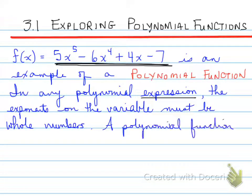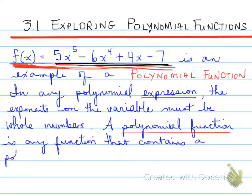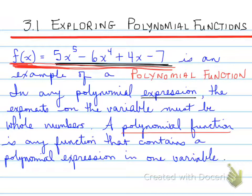A polynomial function — that's the whole thing underlined in red — is any function that contains a polynomial expression in one variable. The variable here is x with different powers, or different exponents.